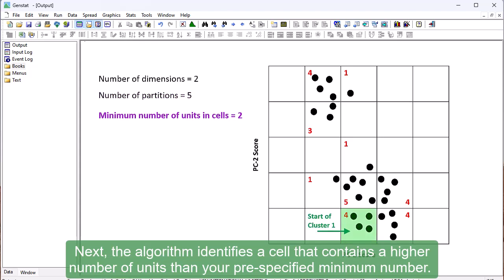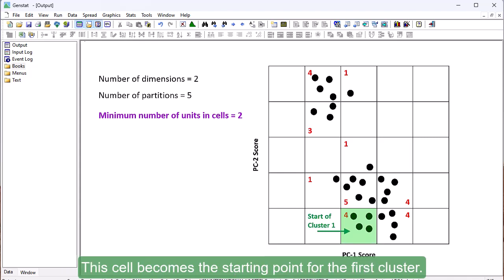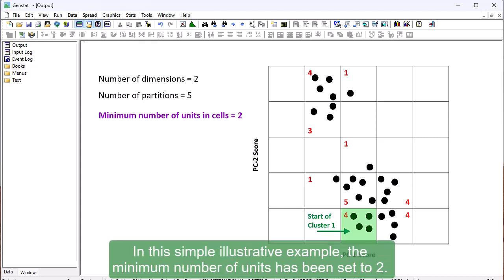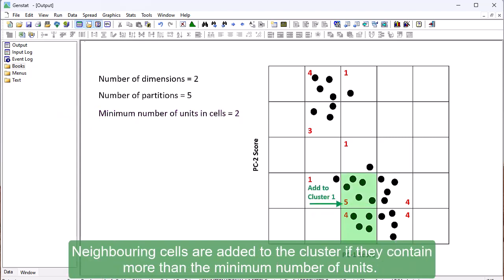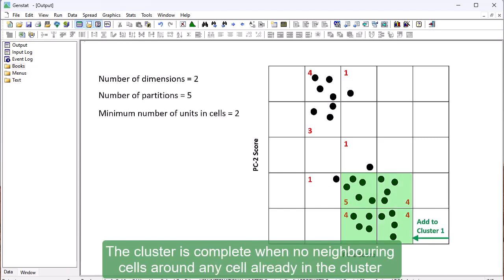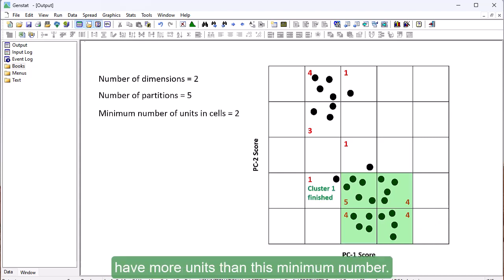Next, the algorithm identifies a cell that contains a higher number of units than your pre-specified minimum number. This cell becomes the starting point for the first cluster. In this simple illustrative example, the minimum number of units has been set to two. Neighbouring cells are added to the cluster if they contain more than the minimum number of units.